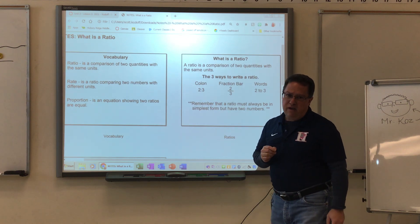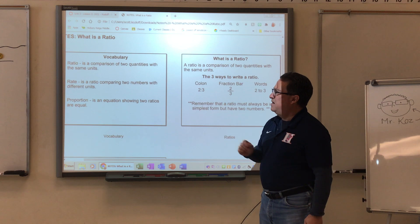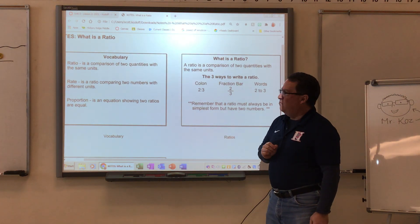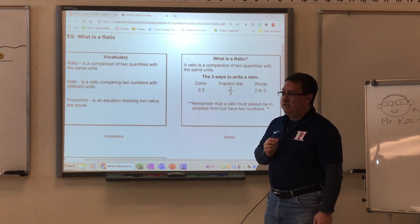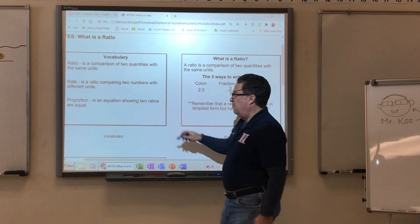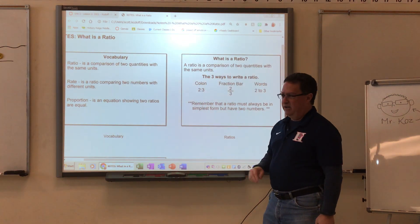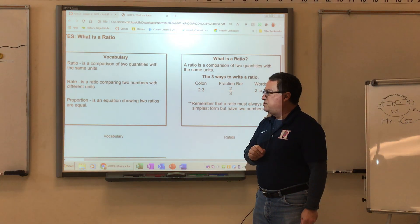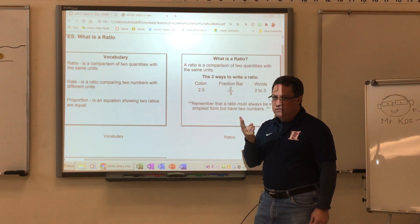First, the three vocabulary words you're going to need to know to begin with. First one is ratio. A ratio is a comparison of two quantities with the same units. A rate is a ratio comparing two numbers with different units. And a proportion is an equation showing two ratios are equal.